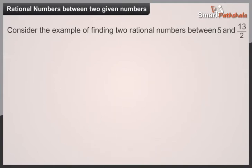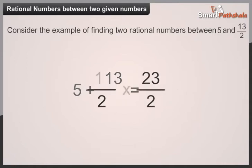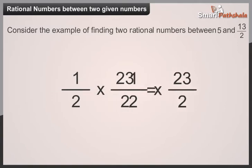A rational number between 5 and 13 divided by 2 is the sum of 5 and 13 divided by 2 and dividing the result by 2, that is 23 divided by 4.